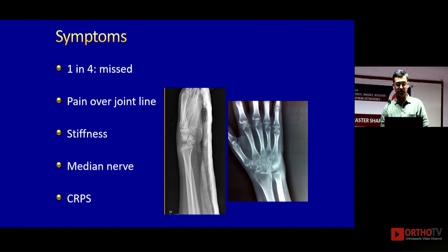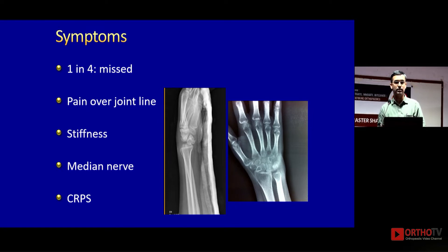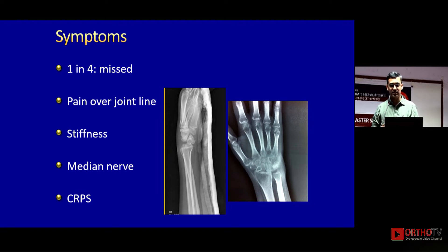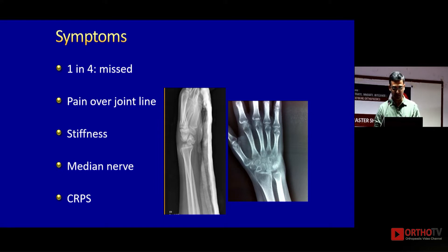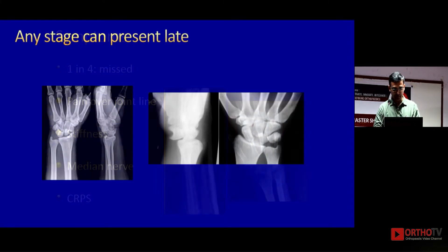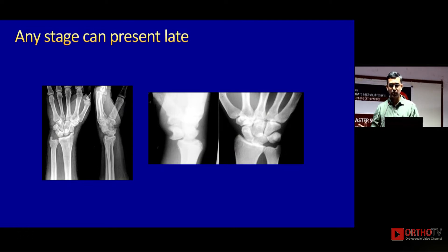The other two things I've seen in missed perilunate dislocations are complex regional pain syndrome — either with a lot of pain, edema, and swelling, or just some persistent neural pain not specifically at the wrist. Kindly assess for any nerve involvement or any CRPS syndrome when you see a missed perilunate.